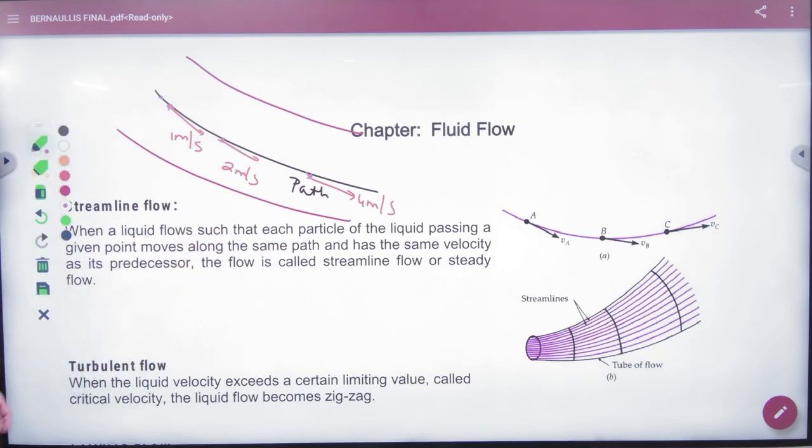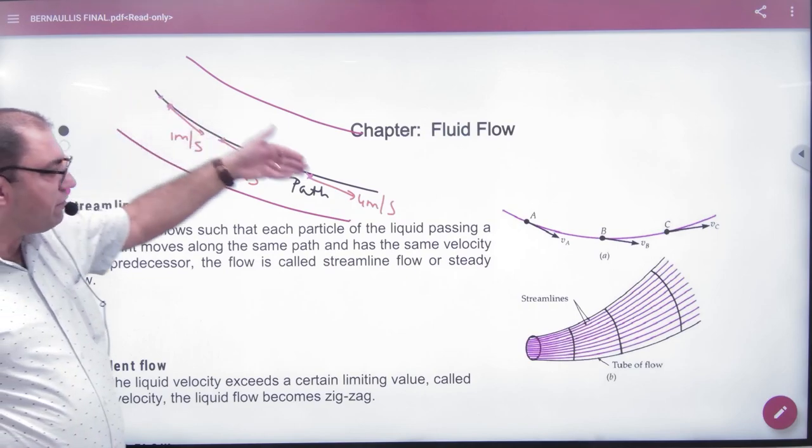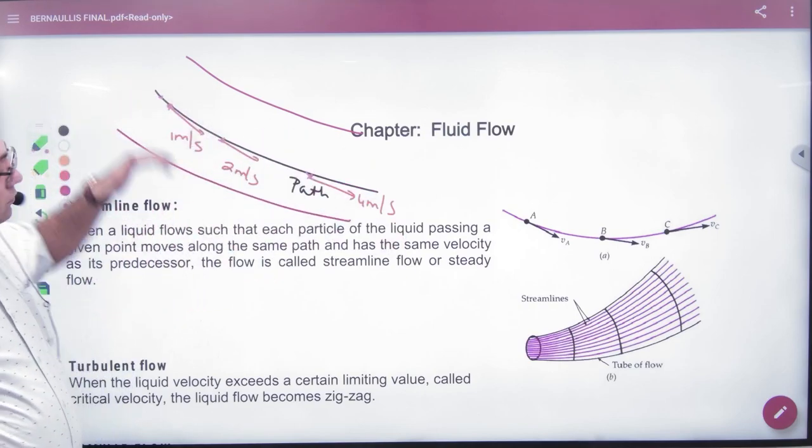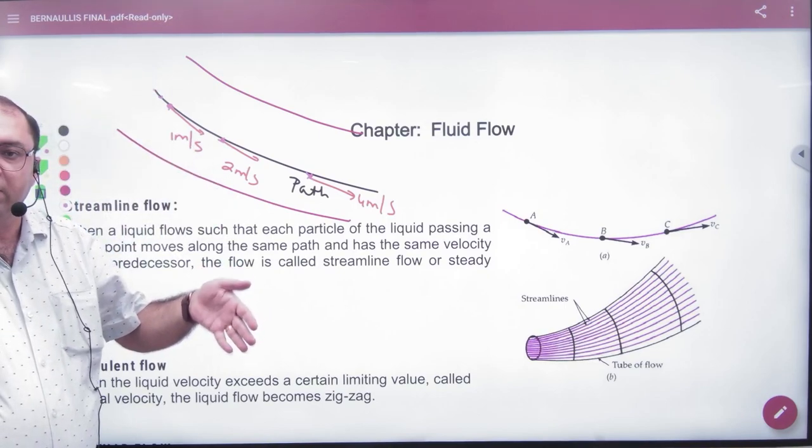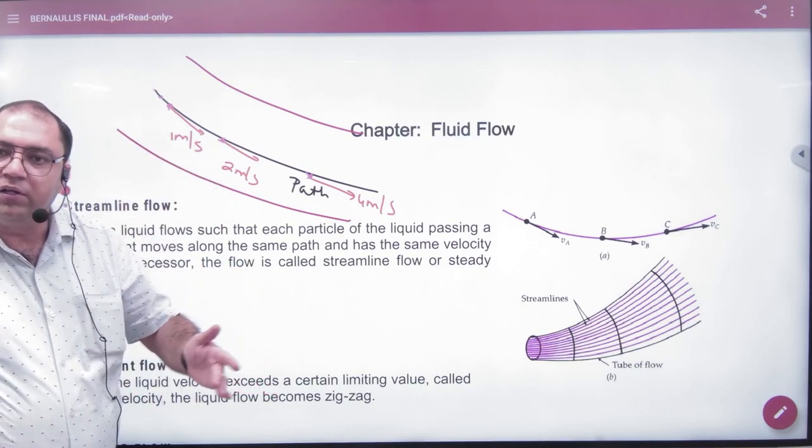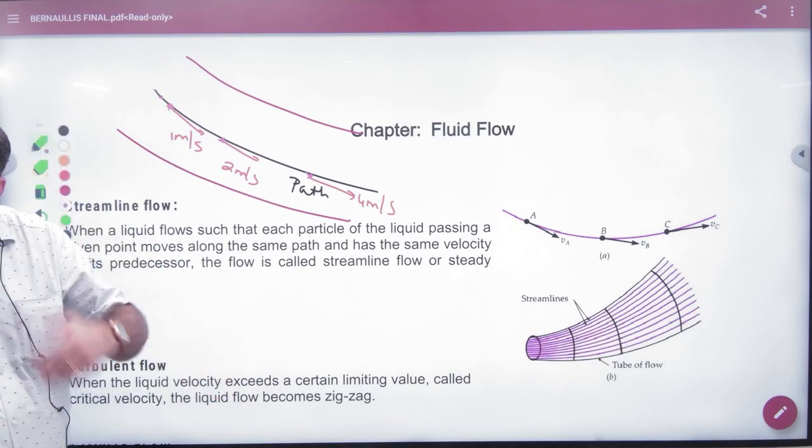And when it reaches this position, its velocity will be exactly the same. So when it comes here, its velocity will be 1, here will be 2, here will be 4 and so on. The next particle which follows this path will follow the same path and the velocity values are exactly the same.